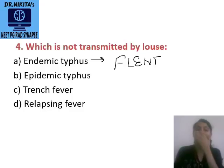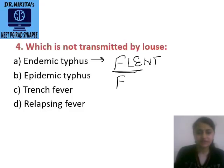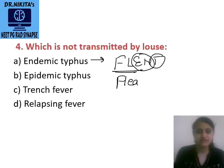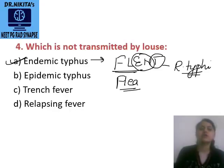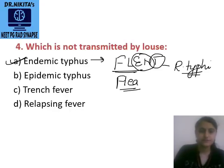The mnemonic for endemic typhus is FLINT — the vector is flea. Endemic typhus: F for flea, T for Typhi, caused by Rickettsia typhi. So endemic typhus is transmitted by flea, not by louse. The answer is endemic typhus.